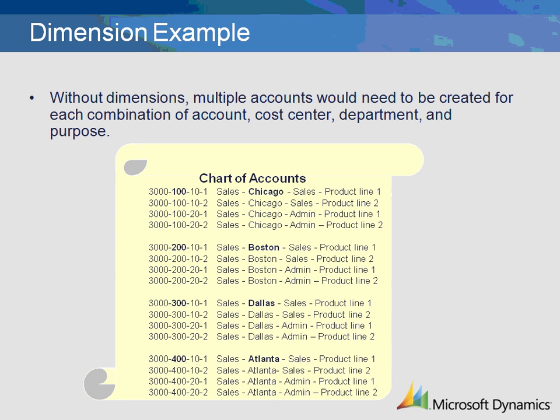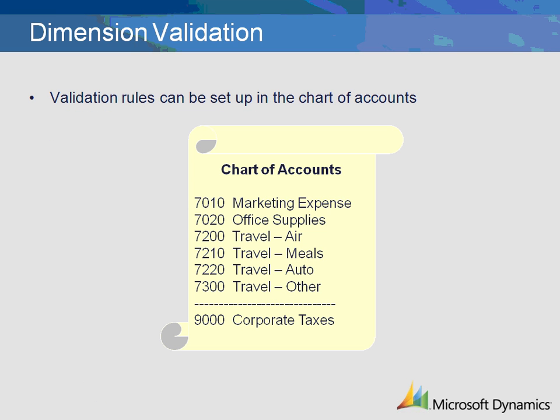Do all profit and loss accounts use every dimension? Probably not. The Microsoft Dynamics AX dimensions are independent of each other — an account can utilize every dimension or none at all. Validation rules can be set up in the chart of accounts to indicate if the dimension is optional or required. Validation rules can also be used to only allow certain dimensions to be entered for particular accounts, and can be used to create default values.